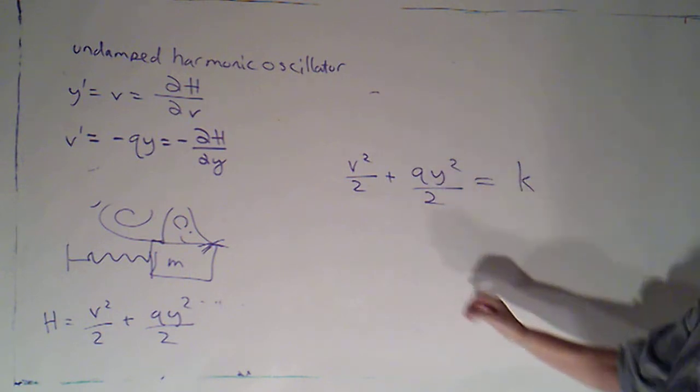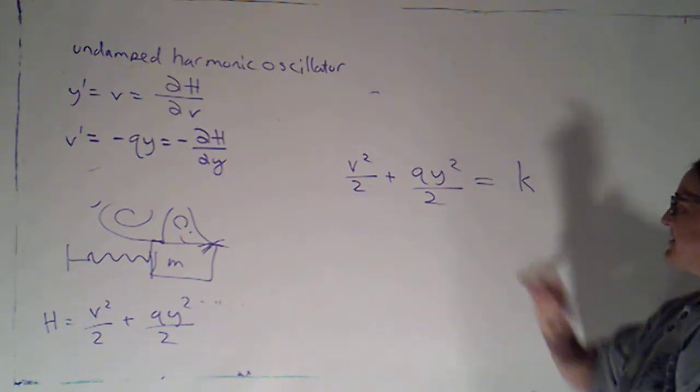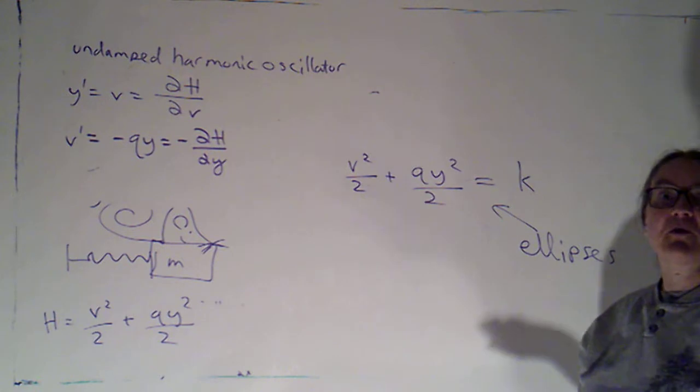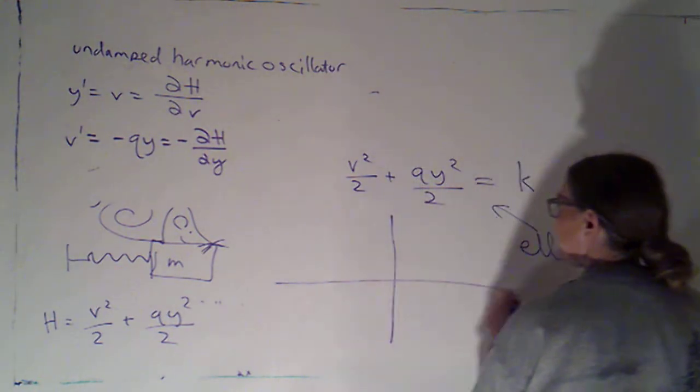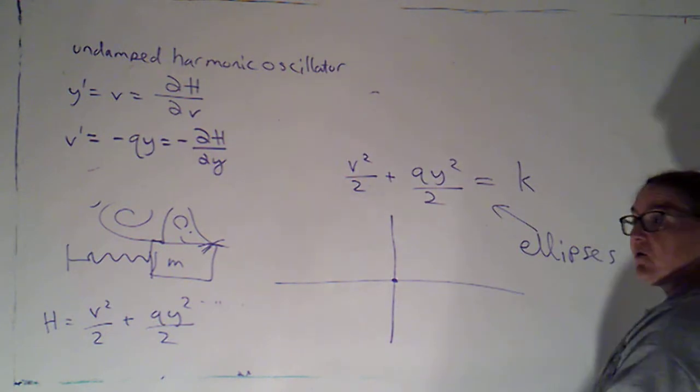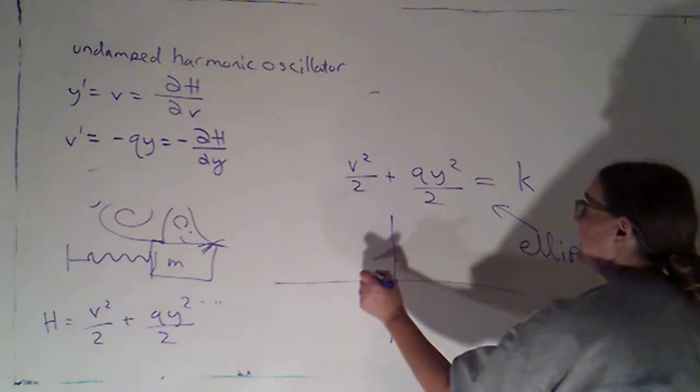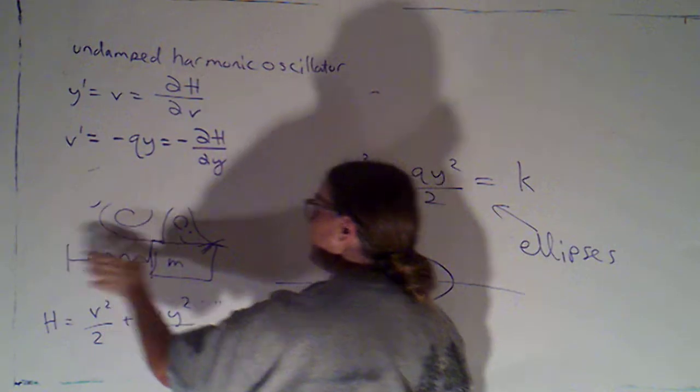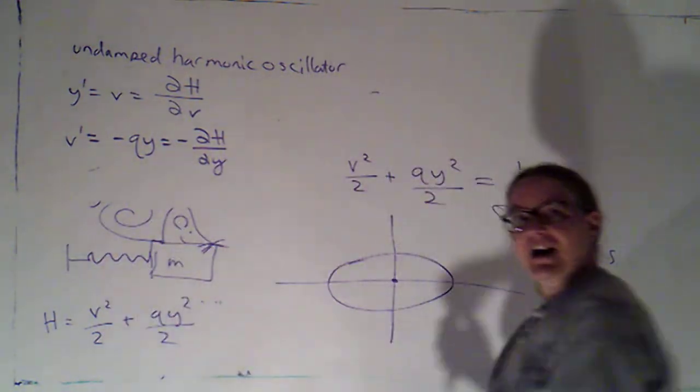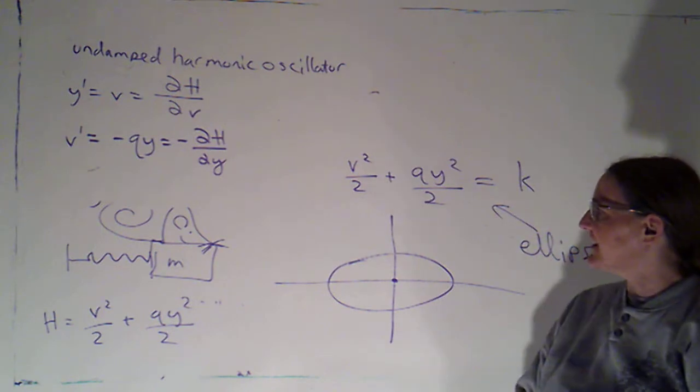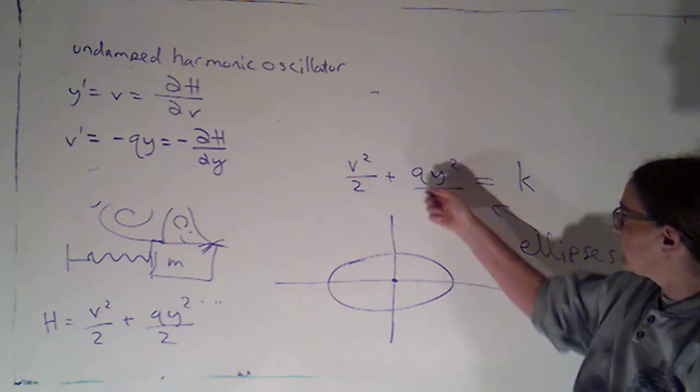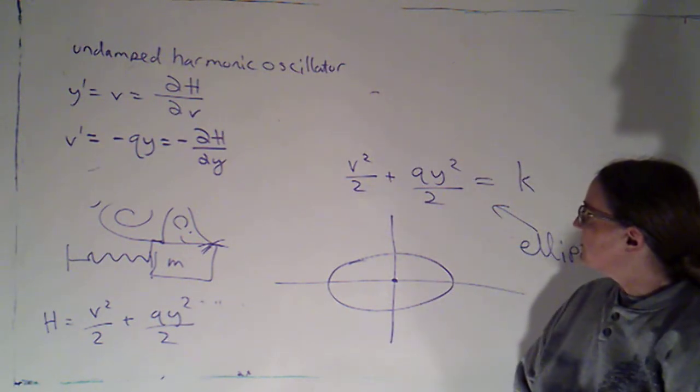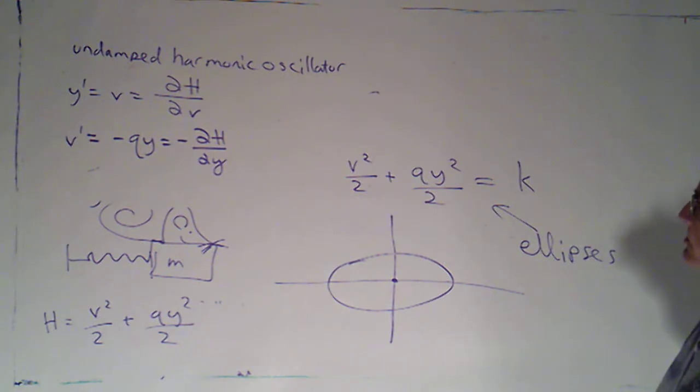If q happens to be 1, those are going to be circles. If q isn't 1, those are ellipses. And that's exactly what we know we're supposed to get for our phase portrait. I know that the equilibrium solution at the origin would be a center and basically the moose, the mass with mouse, it's just going back and forth and back and forth, and the velocity is oscillating and the position is oscillating.